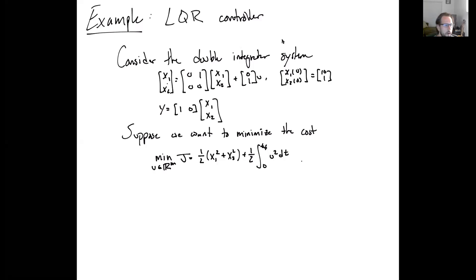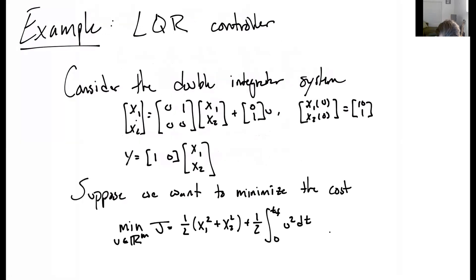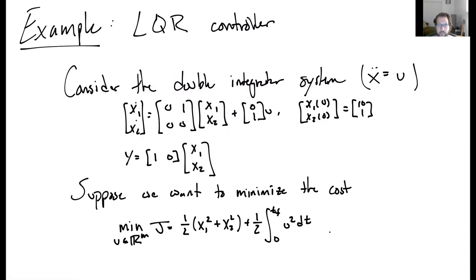Hey guys, let's go through an example for an LQR controller. In this example we're going to consider a double integrator system. A double integrator system is of the form X double dot equals u. When we put it in state space form we get a two-dimensional first-order system, where x1 dot equals x2 and x2 dot equals u.